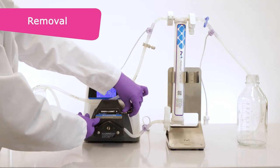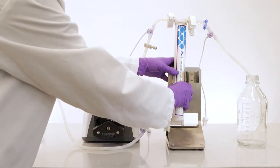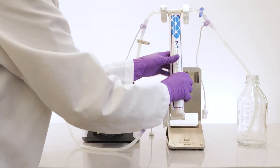You may now clear your TFF system by removing the pelicon capsule and remaining flow path, leaving your space open and clean for your next batch.